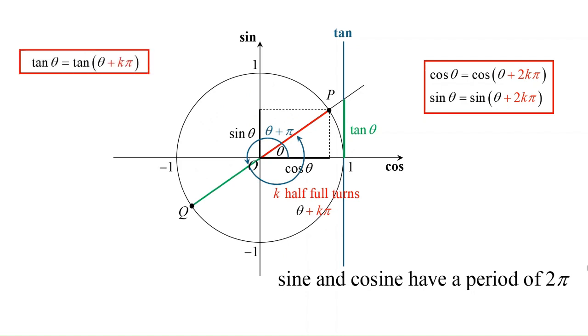Then tan theta is equal to tan of theta plus kπ. Then tan has a period of π.